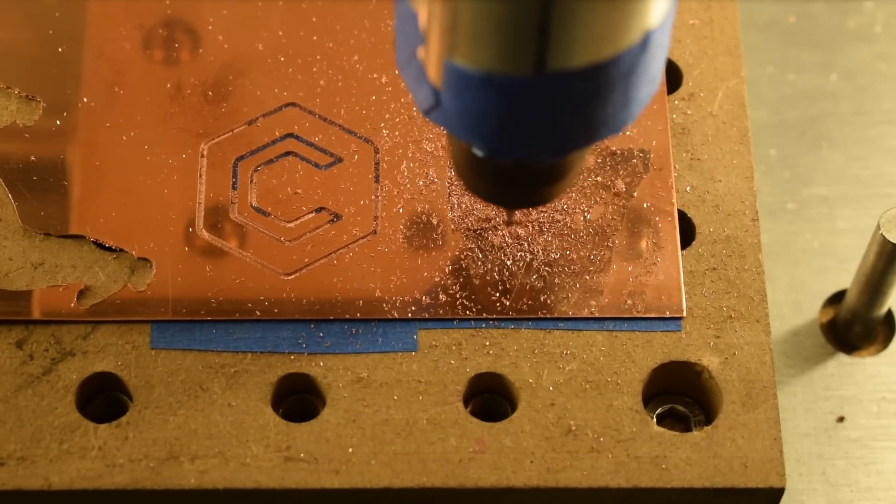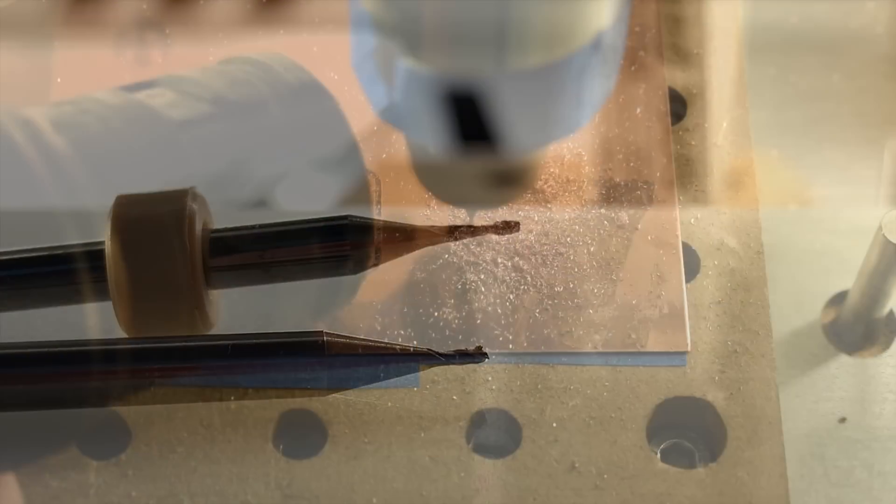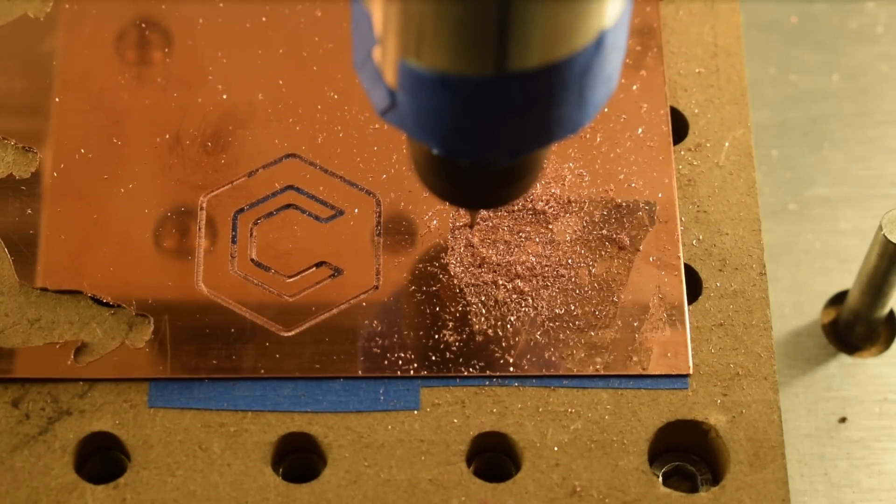Also I want to point out that Carbide 3D's 1/32nd inch cutter is relatively short and stubby with only a 16th inch of flutes. I've gotten cheap ones on eBay with 3/32nds or even an 8th inch of flutes and those will be much more fragile.